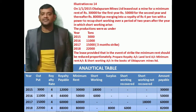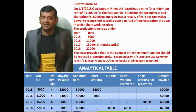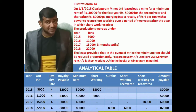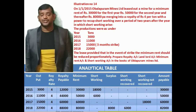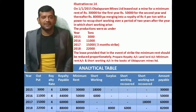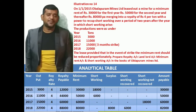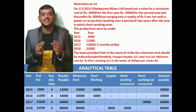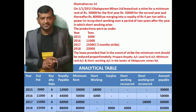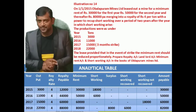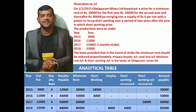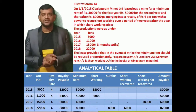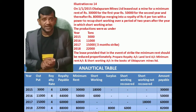Prepare royalty account, landlord account, minimum rent account, and short working account in the books of Obulapuram Mines Limited. Obulapuram Mines Limited has leased out a land with the minimum rent: first year 30,000, second year 50,000, and third year onwards Rs. 80,000.